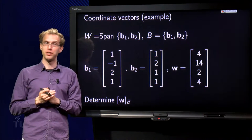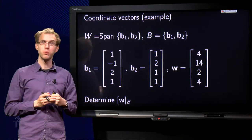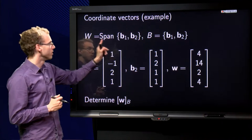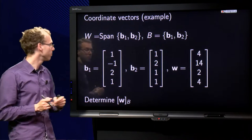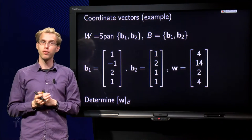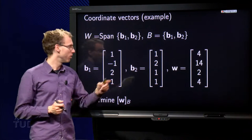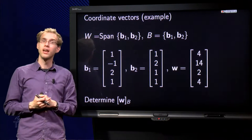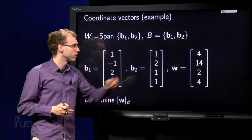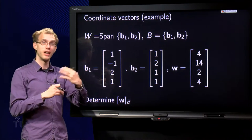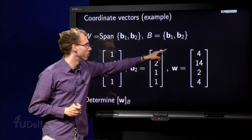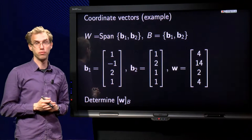We have a subspace W, the span of b1 and b2. The basis for W is a set consisting of b1 and b2, where we have our b1 over here, 1 minus 1 to 1, b2 over here, 1 to 1, 1, and furthermore we have a vector small w into capital W: 4, 14, 2, 4.